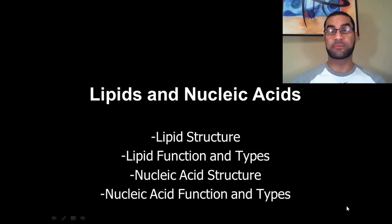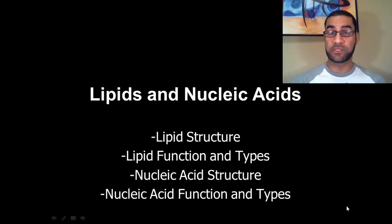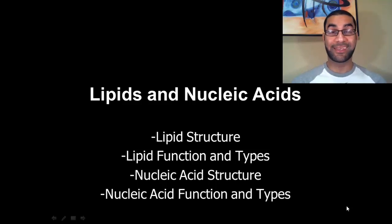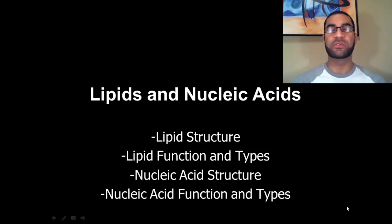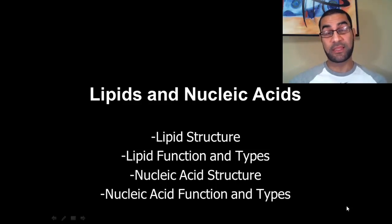We've already covered the concept of monomer to polymer, and we've focused specifically on carbohydrates as the major energy source for the body. Now we're going to get into key components for the body, which are the lipids and nucleic acids — their major functions, the structures of each, why they're so important, and how you can distinguish between them. We're going to cover the lipids first, and then we're going to pull into nucleic acids.